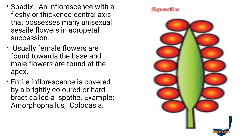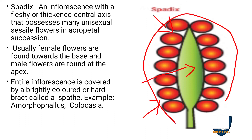Spadix: the inflorescence is fleshy and thickened. The central axis has unisexual flowers which are sessile, arranged in acropetal succession. The female flowers are at the base and the male flowers are at the apex. The entire inflorescence is covered with a brightly coloured spathe, which may be hard or fleshy. Example: Amorphophallus or Araceae.